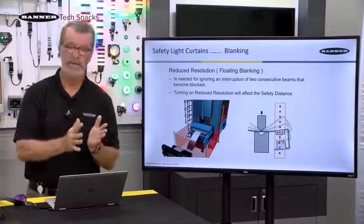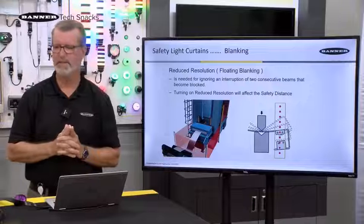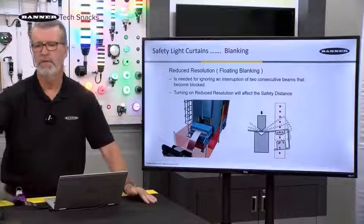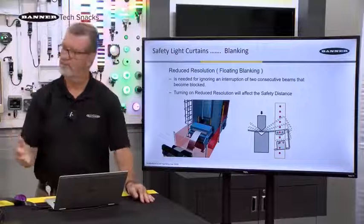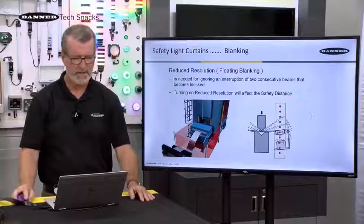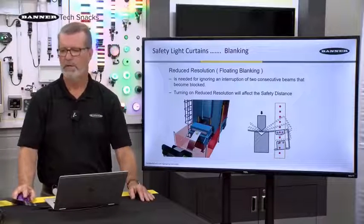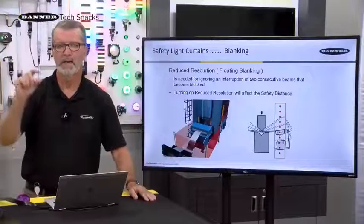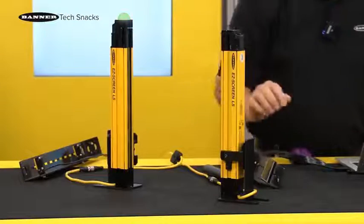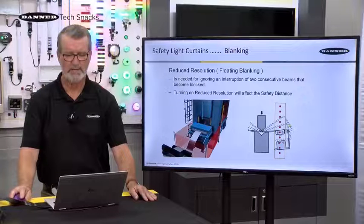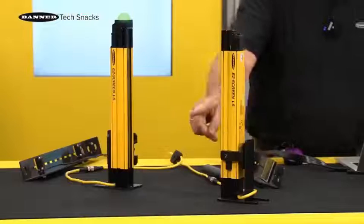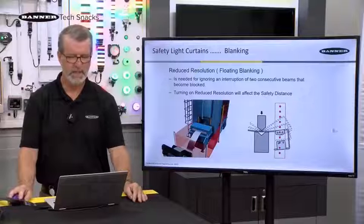Reduced resolution — also called floating blanking — allows an object blocking one or two beams to pass through the curtain without triggering a shutdown. For example, a web passing through the light curtain won't cause a shutoff with reduced resolution enabled. Similarly, on a press where tooling or a product being bent might momentarily block a single beam, reduced resolution allows a slightly bigger object to float through that section without shutting the machine down.